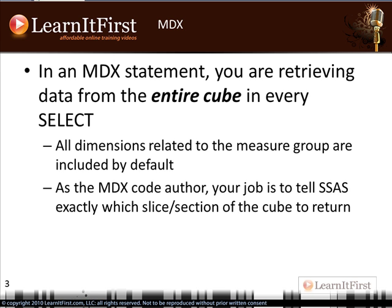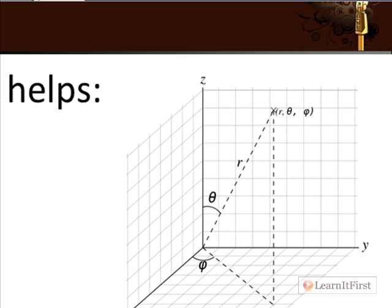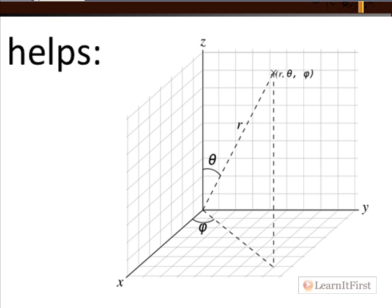I think the visual perspective we talked about in the last video really helps this make sense. Let's put X along geography, Y along time, and Z as total sales. So we've got that 3D visualization. Just to recap for anyone who didn't watch the last video: it's showing a 3D representation of the data. If we want a specific data point, we have to provide three coordinates — the value for X, the value for Y, and the value for Z in the 3D space.